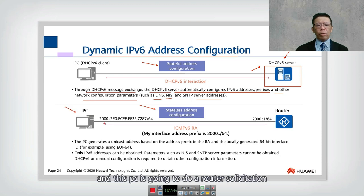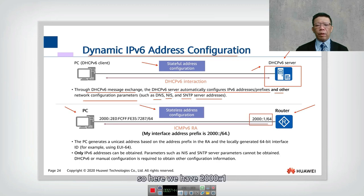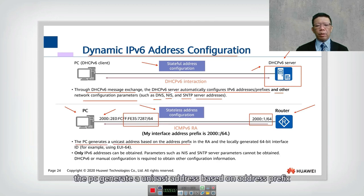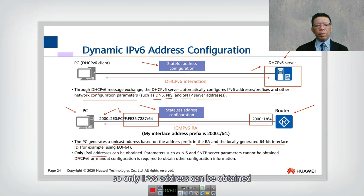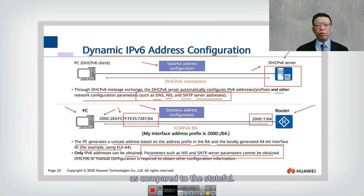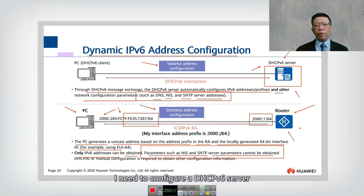For SLAAC or stateless address configuration, the PC sends a Router Solicitation and the router responds with a Router Advertisement containing a prefix such as 2000::. The PC then appends its EUI-64 identifier — the fffe portion derived from its MAC address — to the advertised prefix to form its IPv6 address. The main difference is that with SLAAC only the IPv6 address can be obtained; additional parameters like NIS and SNTP server addresses cannot. With stateful DHCPv6 you can obtain those extra parameters, but you need a DHCPv6 server; with stateless you only need a router.